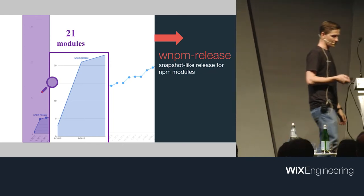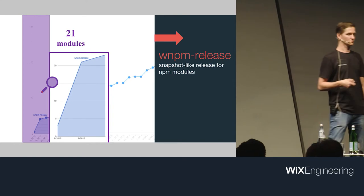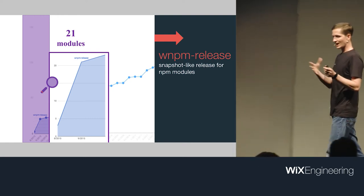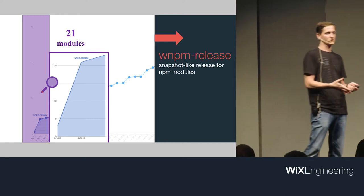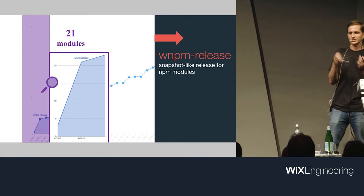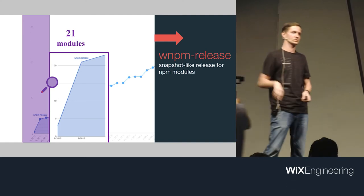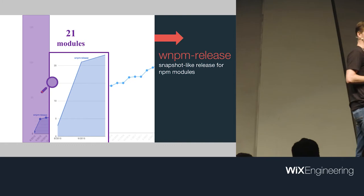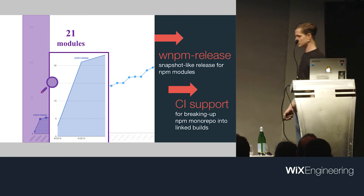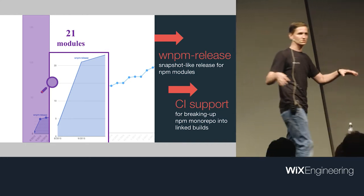Another important project at that time was Wix Code, and the crew there faced similar problems. They built a tool that gave us snapshot-like releases for NPM modules, so I wouldn't have to think about versions or do manual releases. I just write my tests, write my code, push to master, CI picks it up and publishes a new version — similar to snapshot releases in Maven. We also got CI support with separate builds for each module in the monorepo.